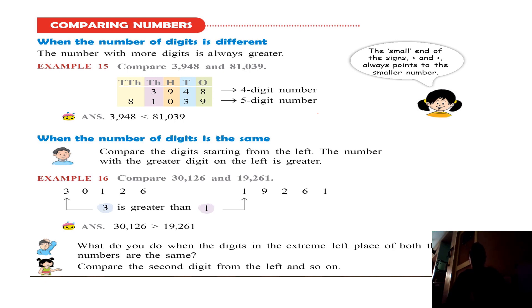We compare the left digits first in both numbers and then we find which is greater. But what will you do when the digits at the extreme left of both numbers are the same? When we go into the next example, you will understand.